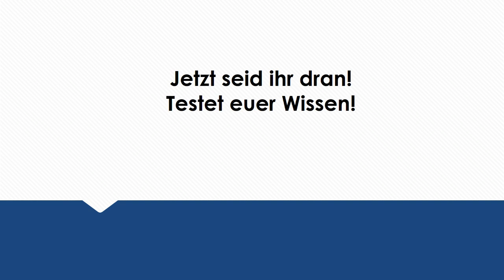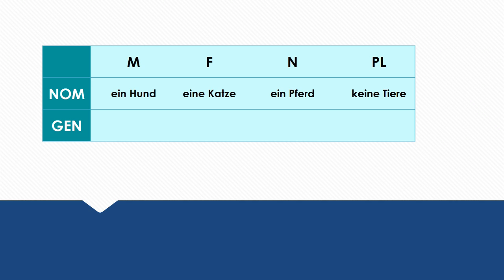Jetzt seid ihr dran! Testet euer Wissen. Now it's your turn — test your knowledge. I'll give you some nouns in the nominative case and you have to come up with the genitive form: ein Hund, eine Katze, ein Pferd, keine Tiere. The genitive forms are: eines Hundes, einer Katze, eines Pferdes, keine Tiere.